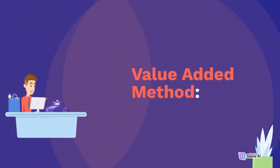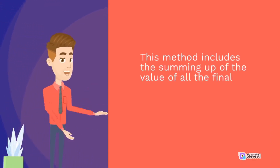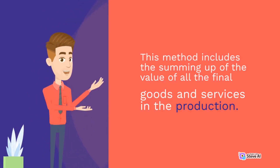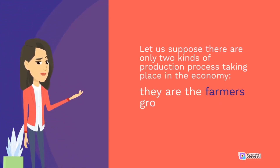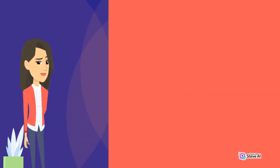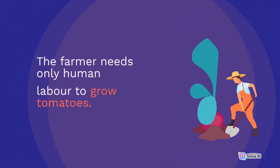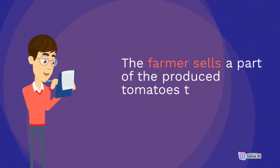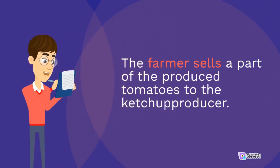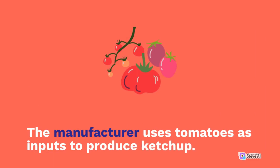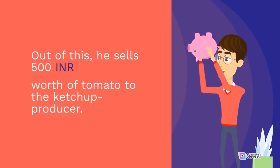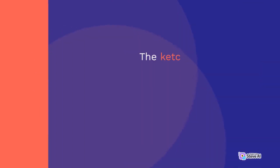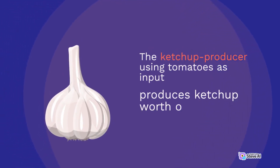Value Added Method: This method includes the summing up of the value of all the final goods and services in the production. Let us suppose there are only two kinds of production process taking place in the economy: the farmer growing tomatoes and the ketchup producer. The farmer needs only human labor to grow tomatoes. The farmer sells a part of the produced tomatoes to the ketchup producer. The manufacturer uses tomatoes as inputs to produce ketchup. In a given year, the farmer grows tomatoes worth 1000 INR. Out of this, he sells 500 INR worth of tomatoes to the ketchup producer.